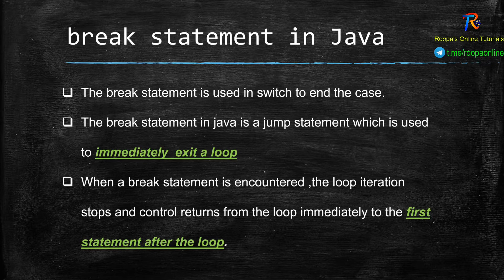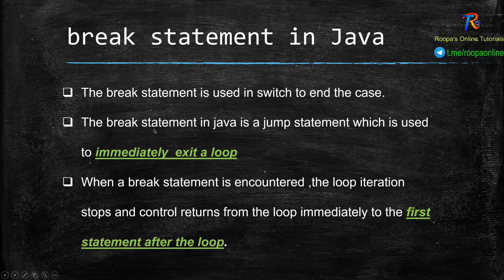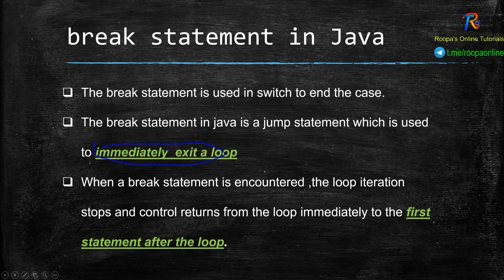The break statement is used in switch to end the case — we have already discussed this in our previous video. After a case and its statements are finished, we use break to come out of that case block. The break statement can also be used in a loop — for loop, while loop, or do-while loop. The break statement is a jump statement used to immediately exit from the loop. When the break keyword is used, it exits from the block and does not continue with the rest of the statements in the block.